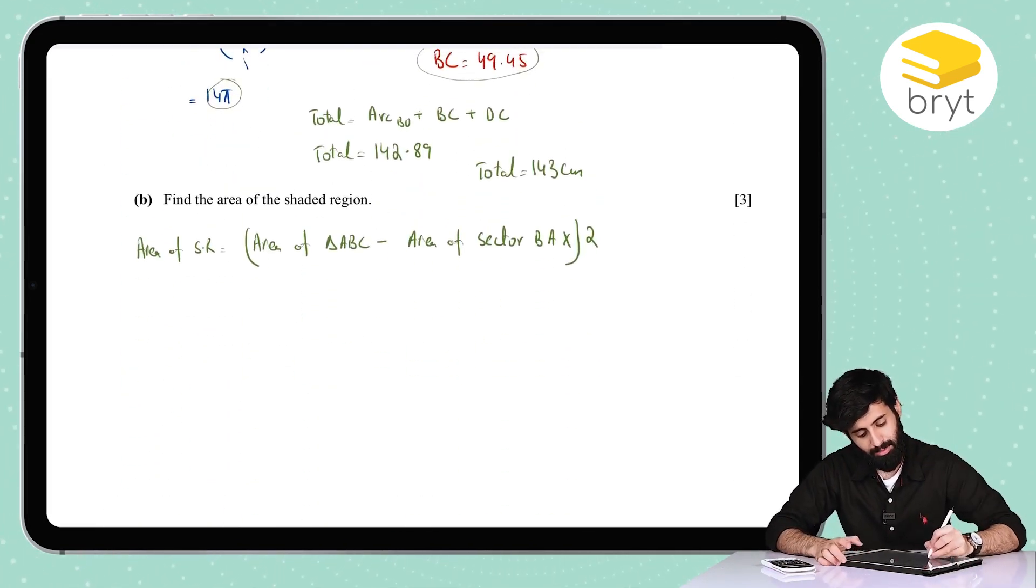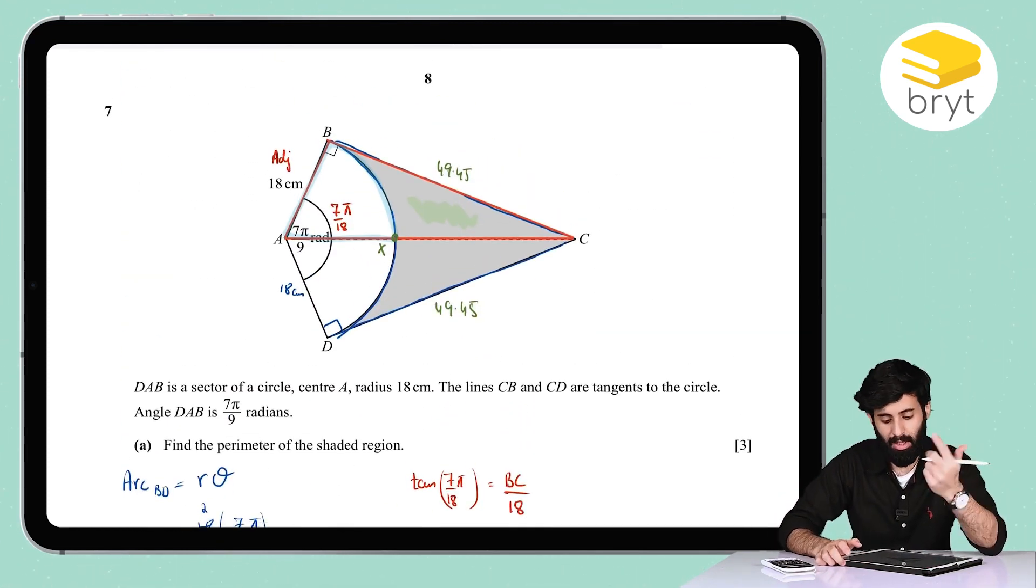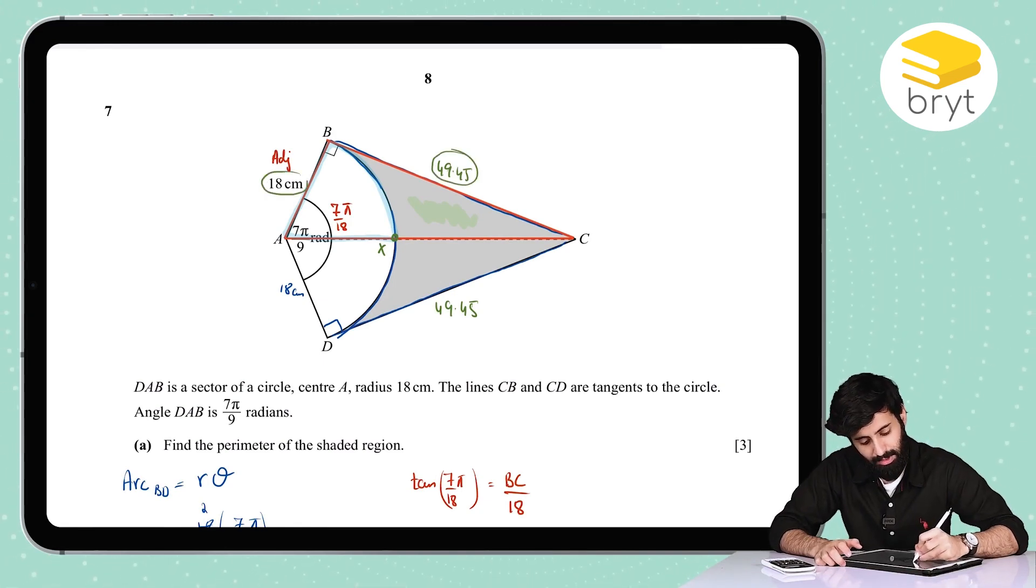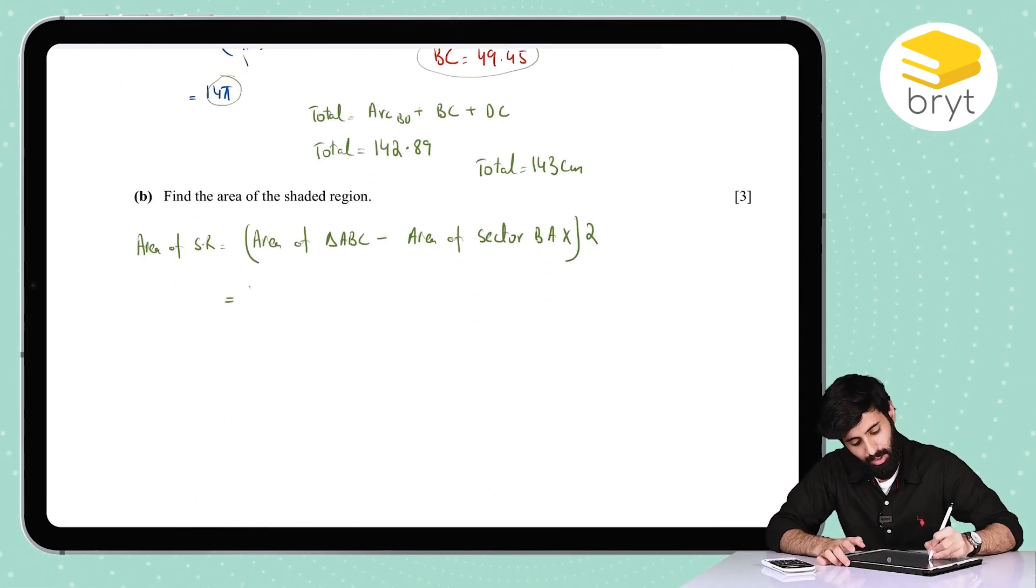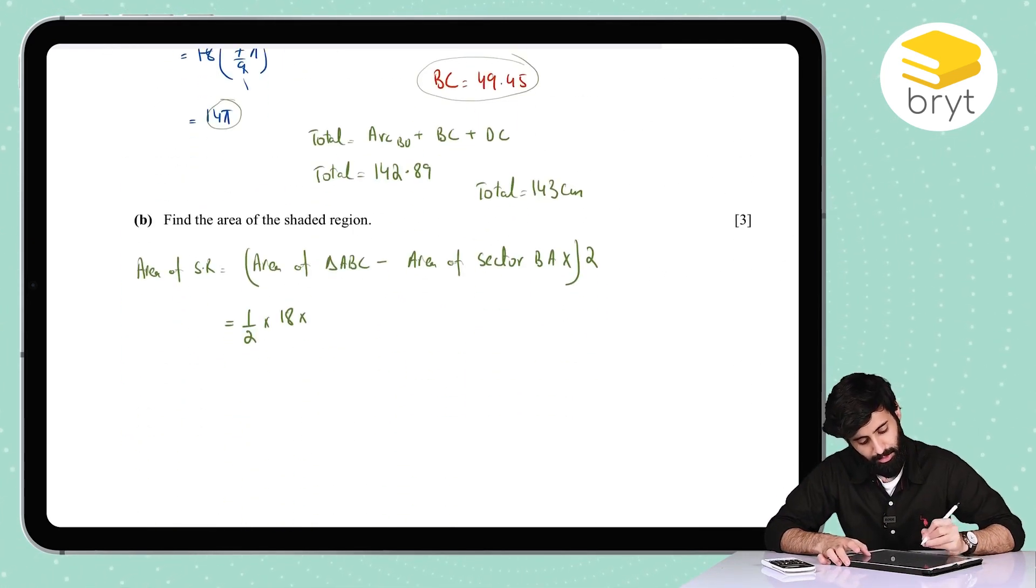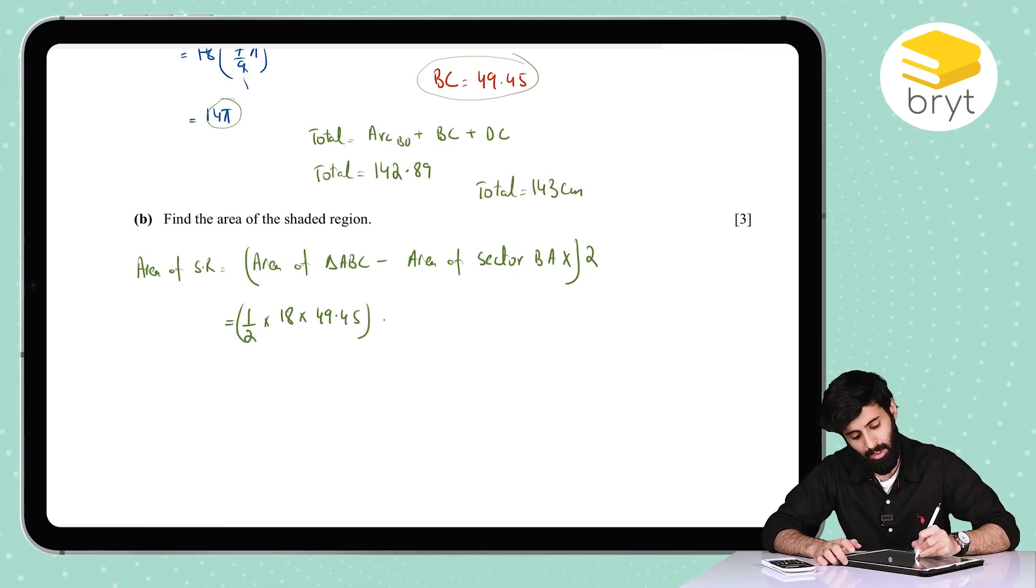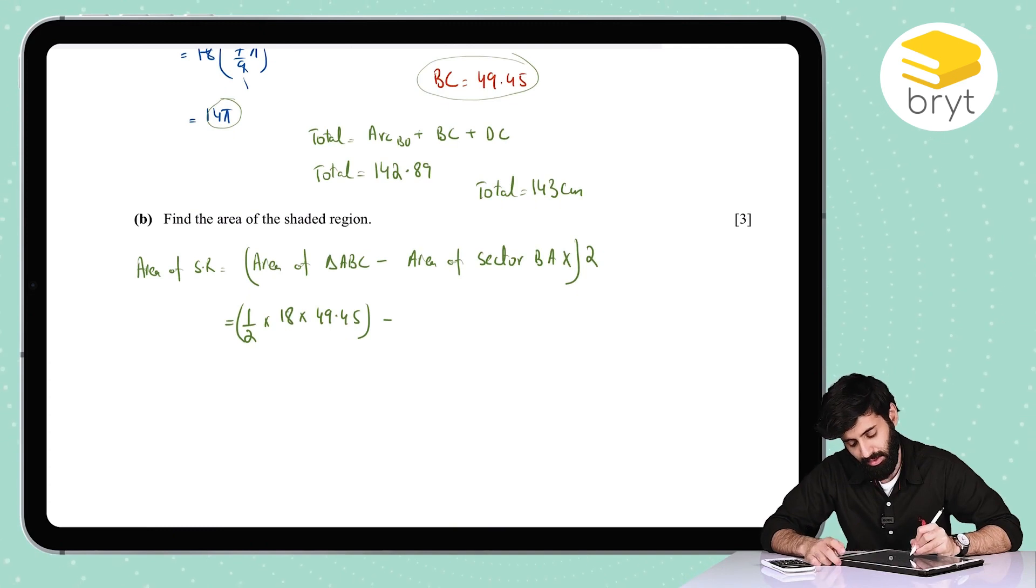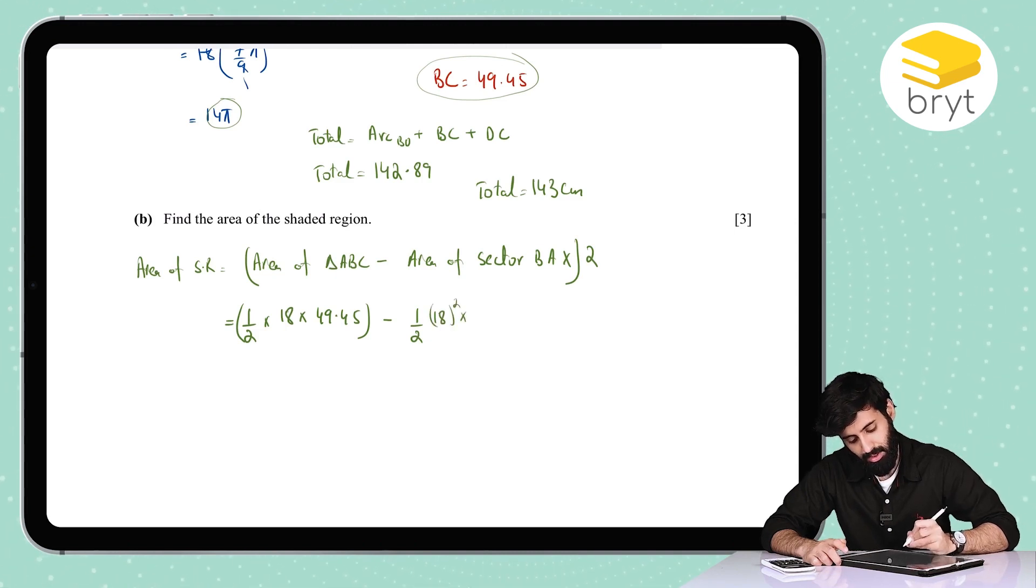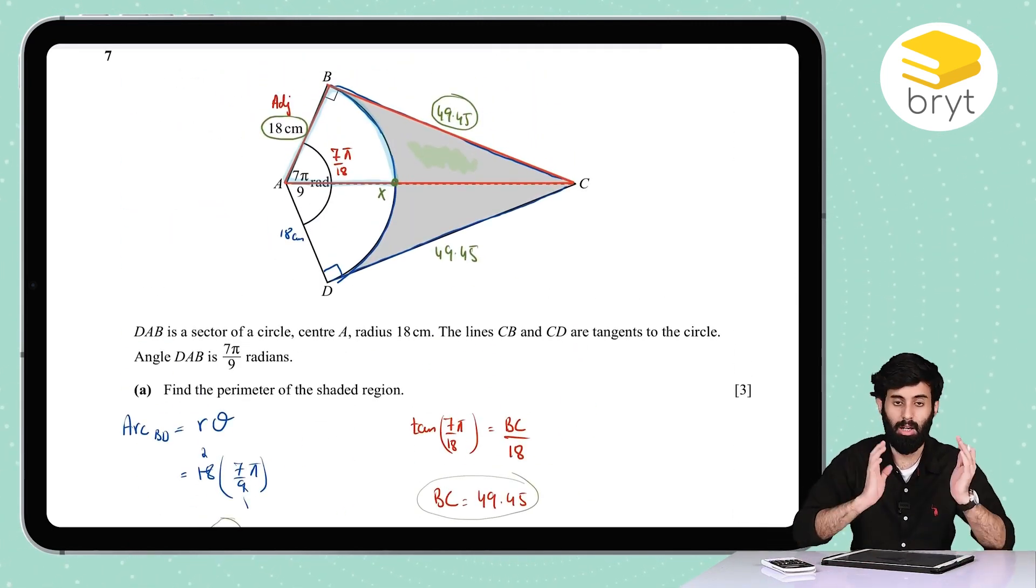Now, if I want the area of the triangle ABC, the good thing is that we've done all the hard work for that. We have 49.5 and we have 18. So I'll do half times 18 times 49.45. I'm using it as 49.45 because this is not my final answer. Minus the area of the sector. Area of sector means half r squared, so that means 18 squared times theta. So theta, remember, is not going to be 7 over 9. In fact, it's going to be 7 over 18, because that's the half angle.